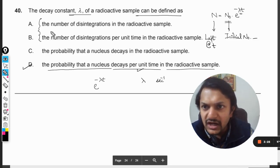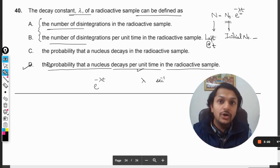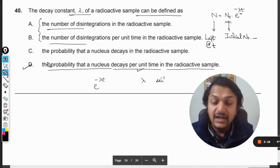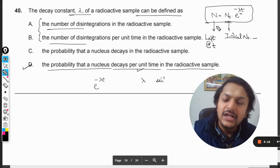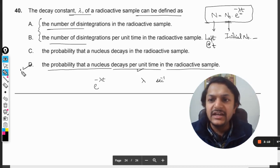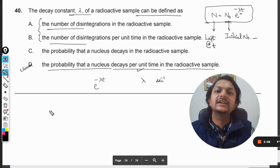The above two options are the number of disintegrations, but lambda does not give you directly the number of disintegrations that have taken place. No, not at all, because there is a different formula for that. So I can only say that D is the correct answer: that is the probability that a nucleus decays per unit time in the radioactive sample.